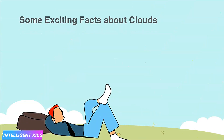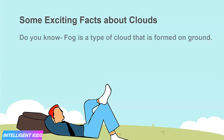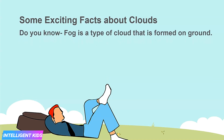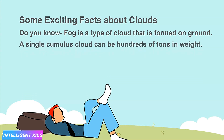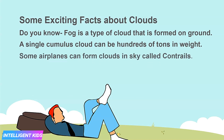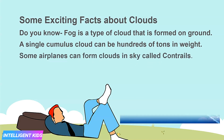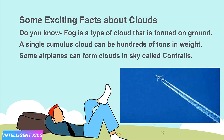Now I will be telling you some exciting facts about clouds. Did you know fog is a type of cloud that is formed on the ground? A single cumulus cloud can be hundreds of tons in weight. And also, some aeroplanes can form clouds in the sky called contrails.